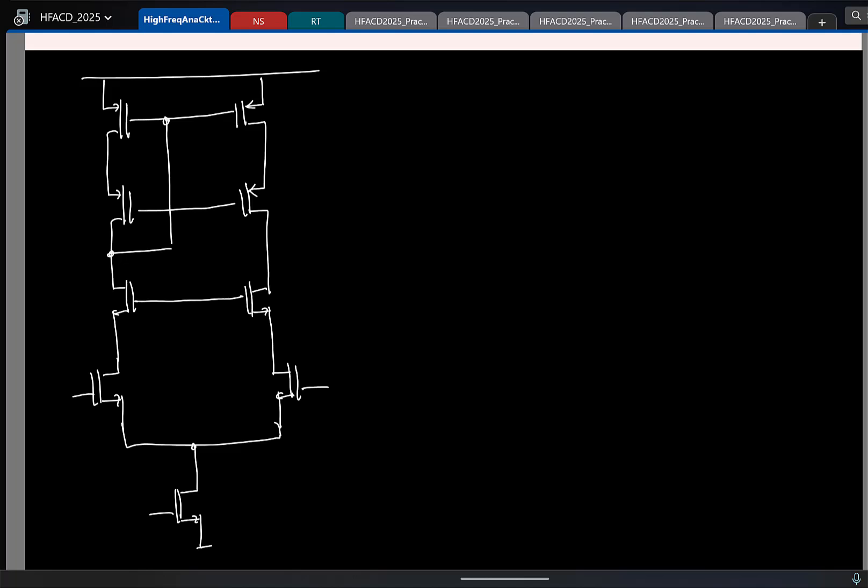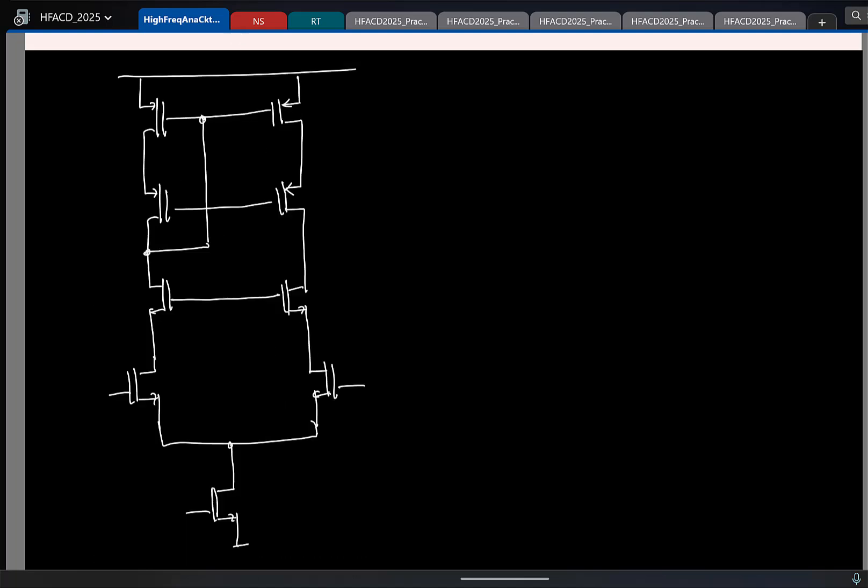And here we did the self-biasing by diode connecting this transistor. The supply is short and remember these are all connected to some DC bias voltages for the cascodes. So in small signal they are also short. I will redraw them like this.